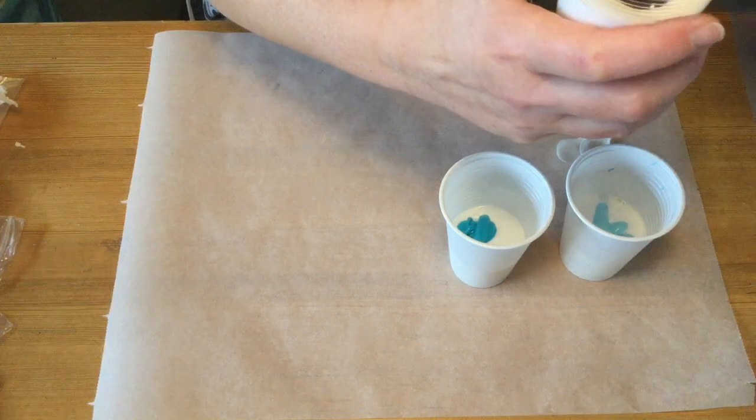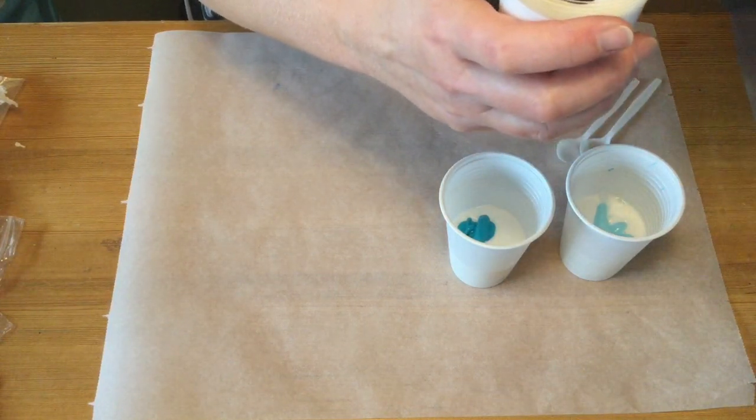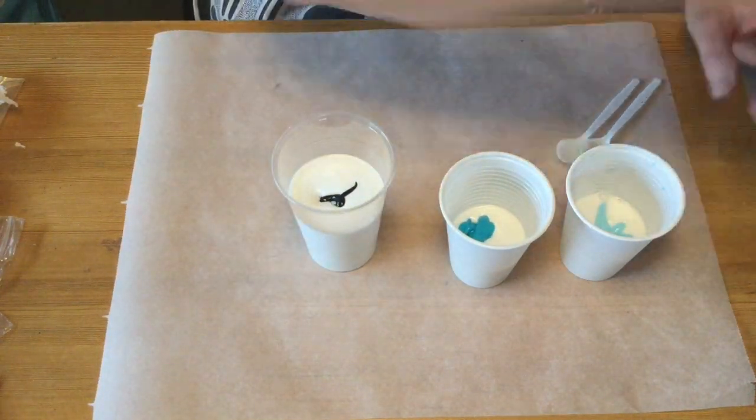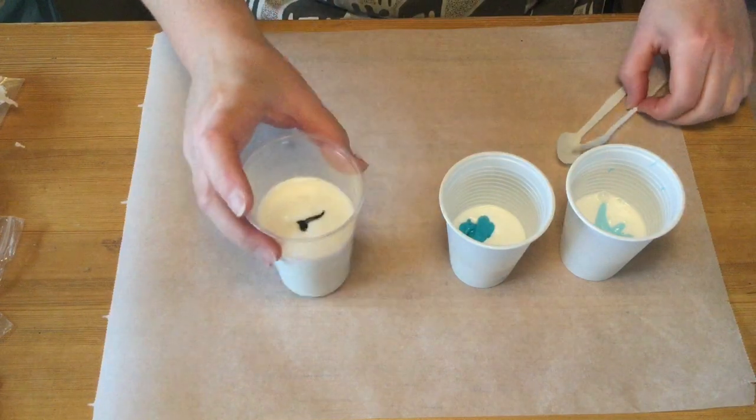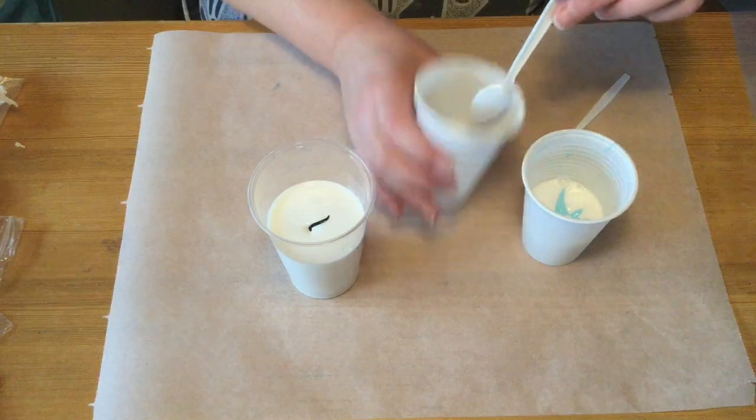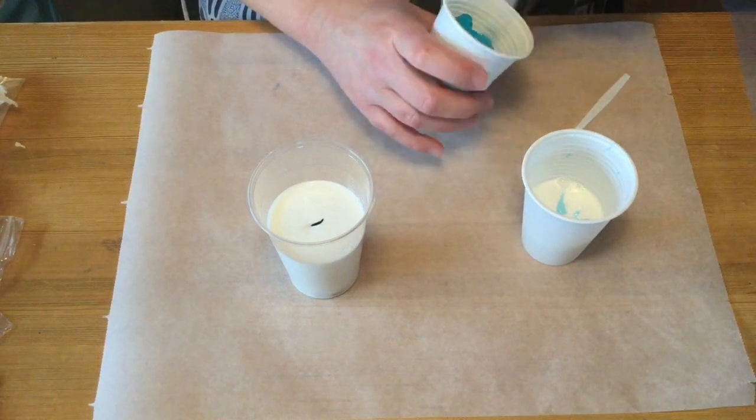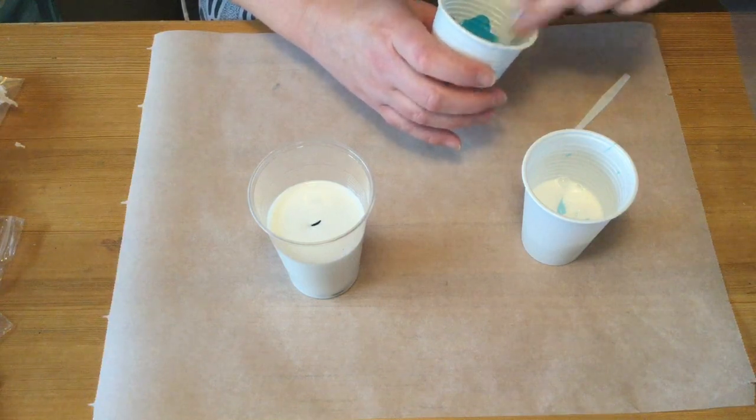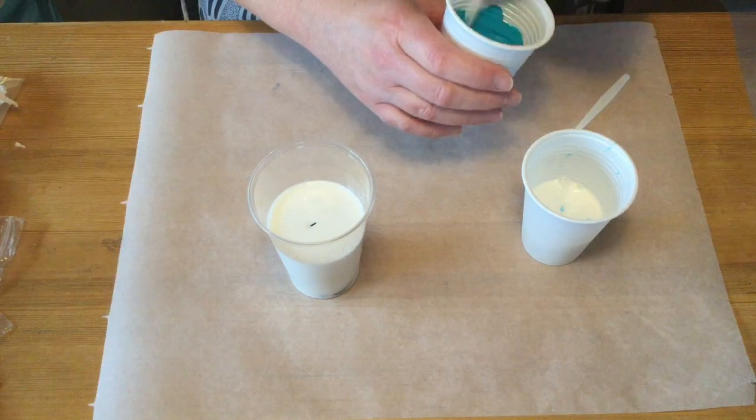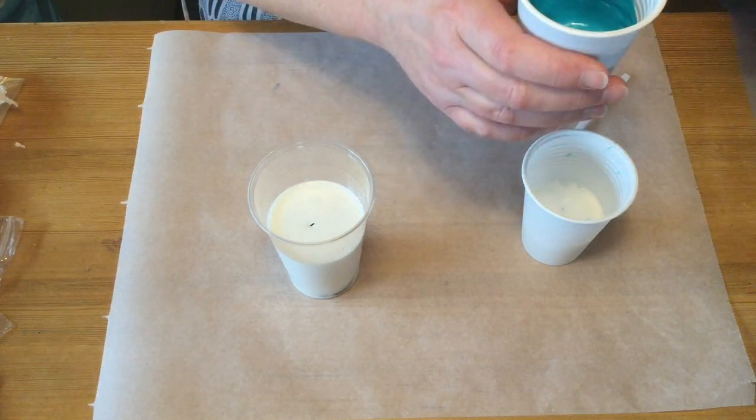So this is two parts Floetrol at least, and then the black I don't take that much. When I'm working with the negative space I don't use that much paint really, it's more Floetrol than paint. With only about two parts Floetrol and one part paint, this is the consistency and that is way too thick of course.